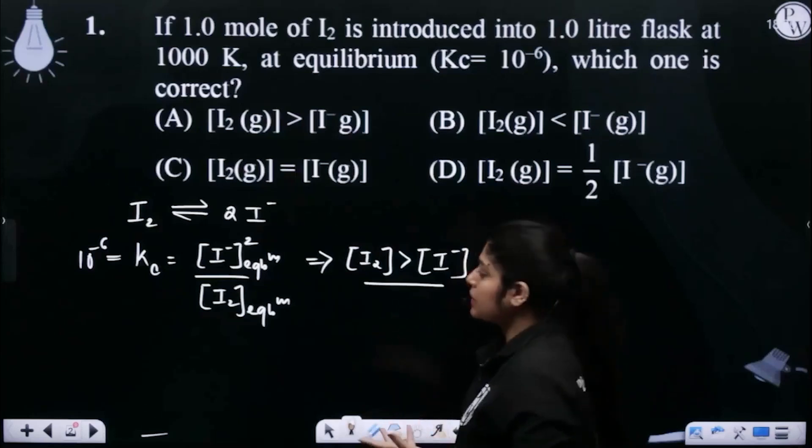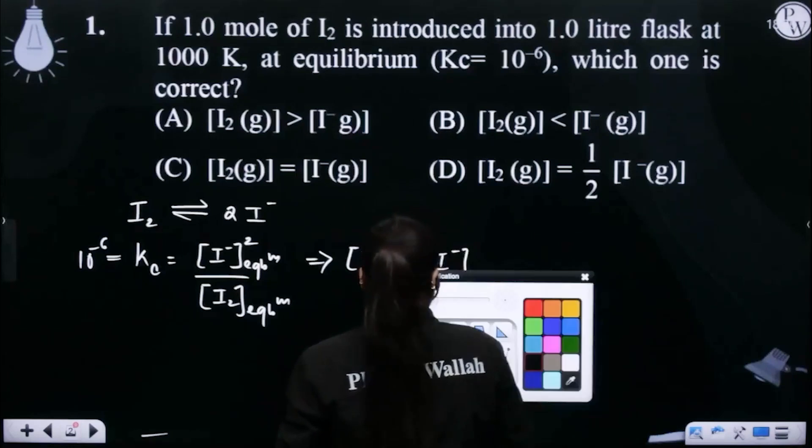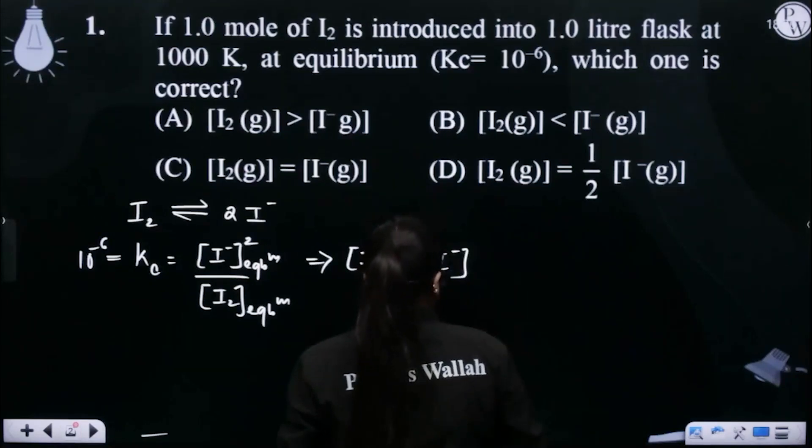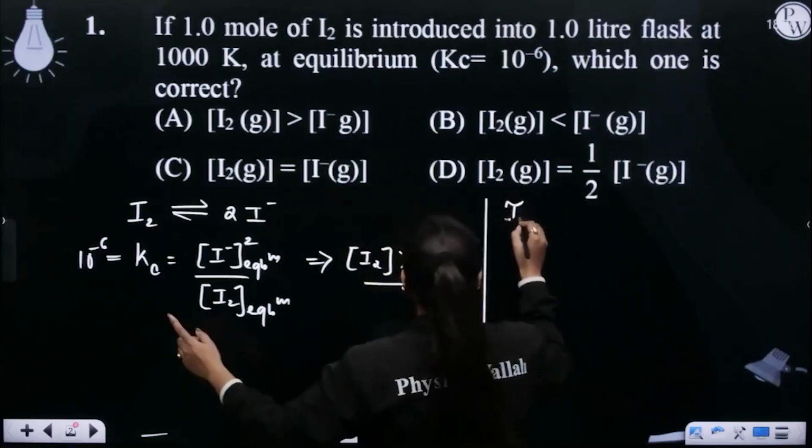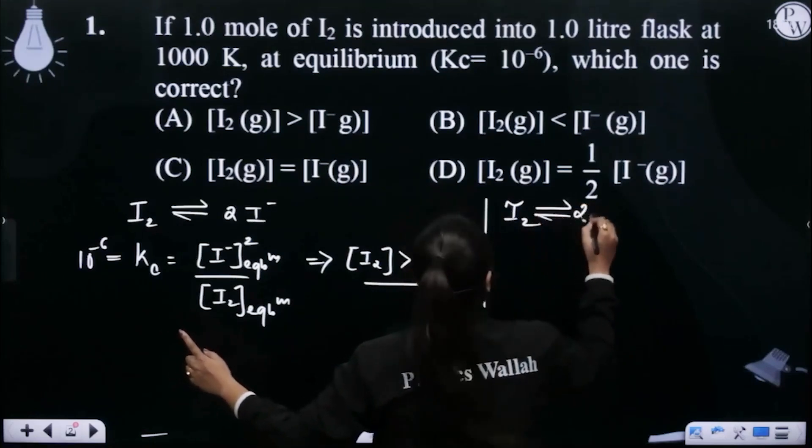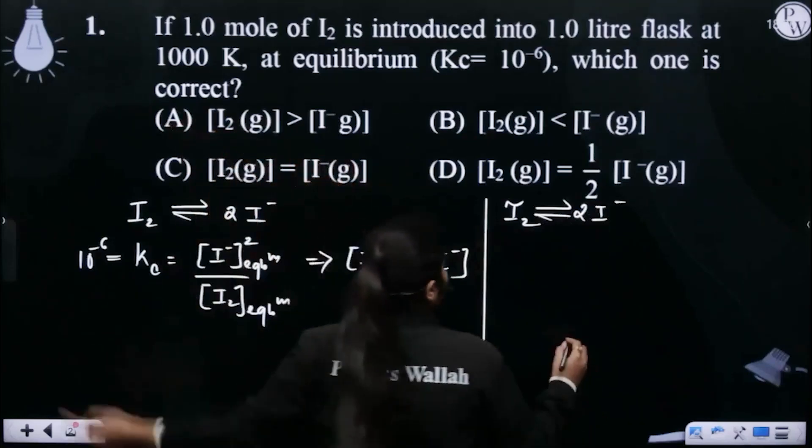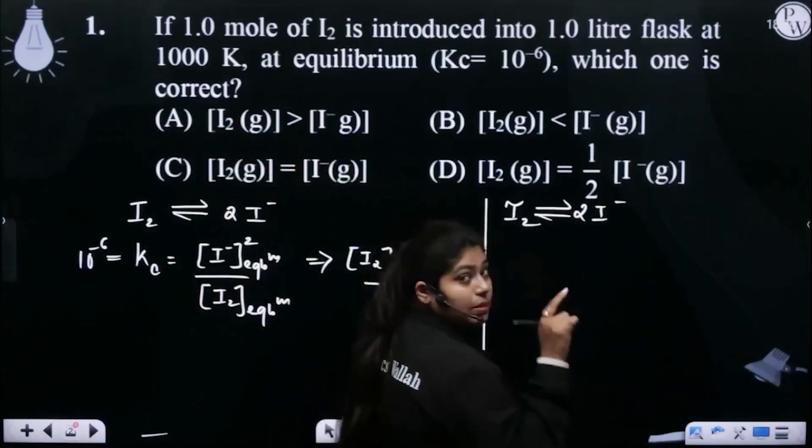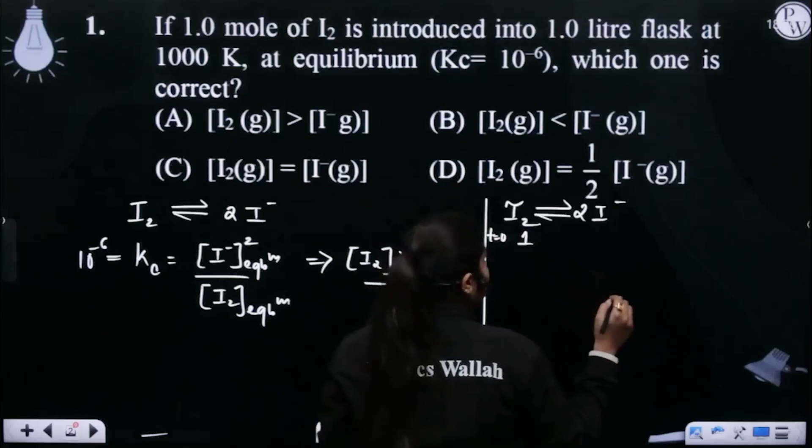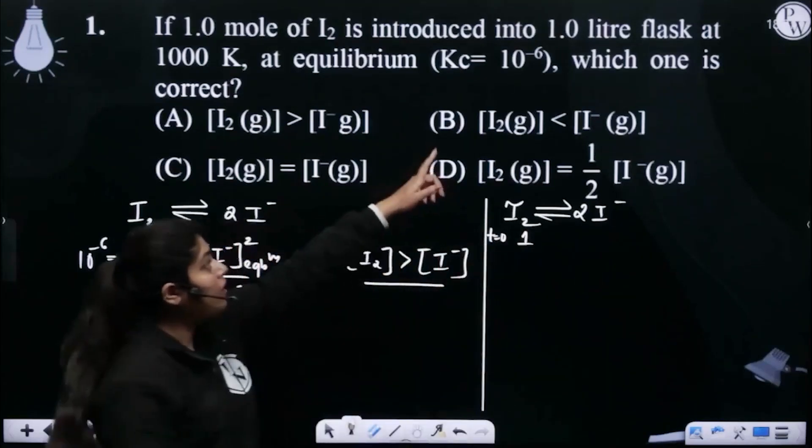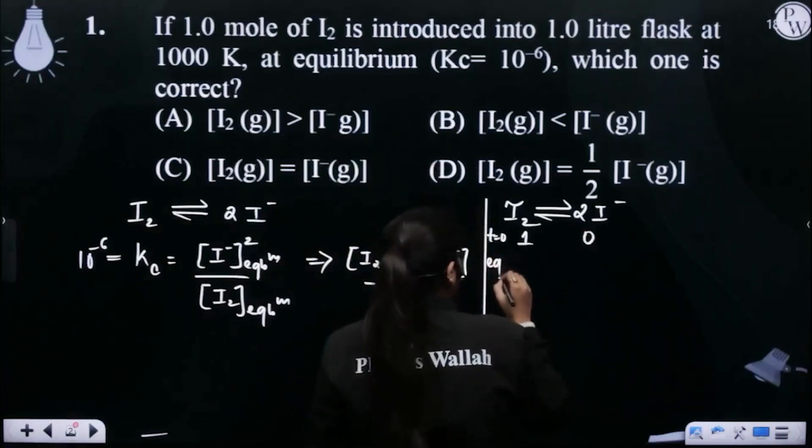We will write the reaction: I2 gives I minus. Let us assume initially, how do we solve it? I2 is how much? 1 mole. So initially, at time 0, this is 1 mole. Concentration will be 1 because the volume is also 1 liter. I minus is 0. Now what will happen at equilibrium? Let us say the x amount is consumed.